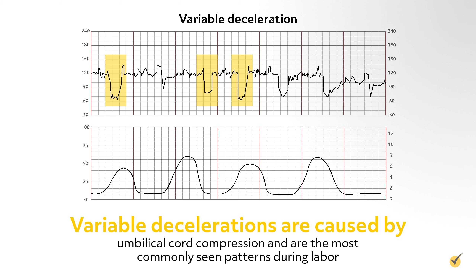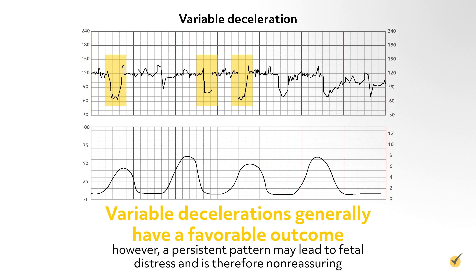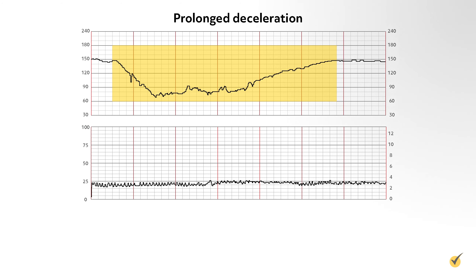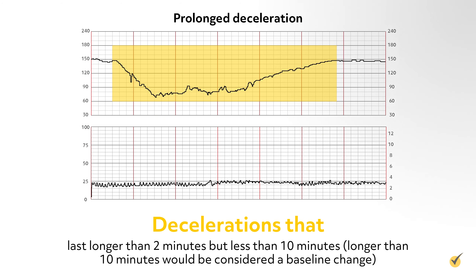Early deceleration of the fetal heart rate is a gradual decrease of greater than 30 seconds to nadir, or the bottom of the deceleration, and then return to fetal heart rate baseline. The bottom of the deceleration mirrors the peak of the contraction. They are caused by head compression and have no pathological significance.